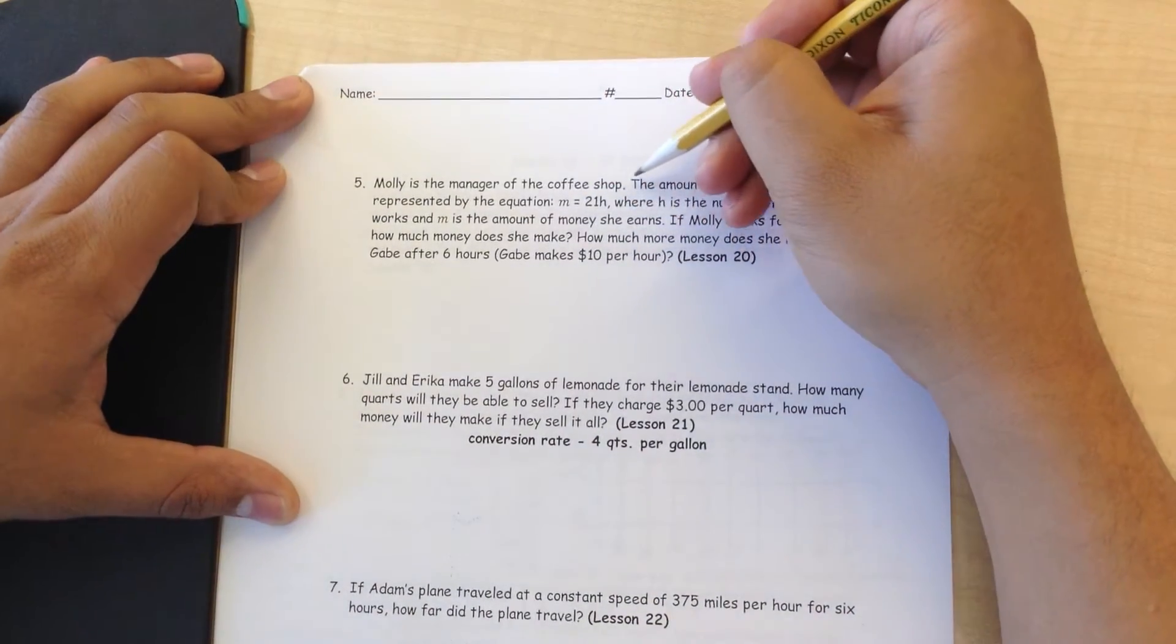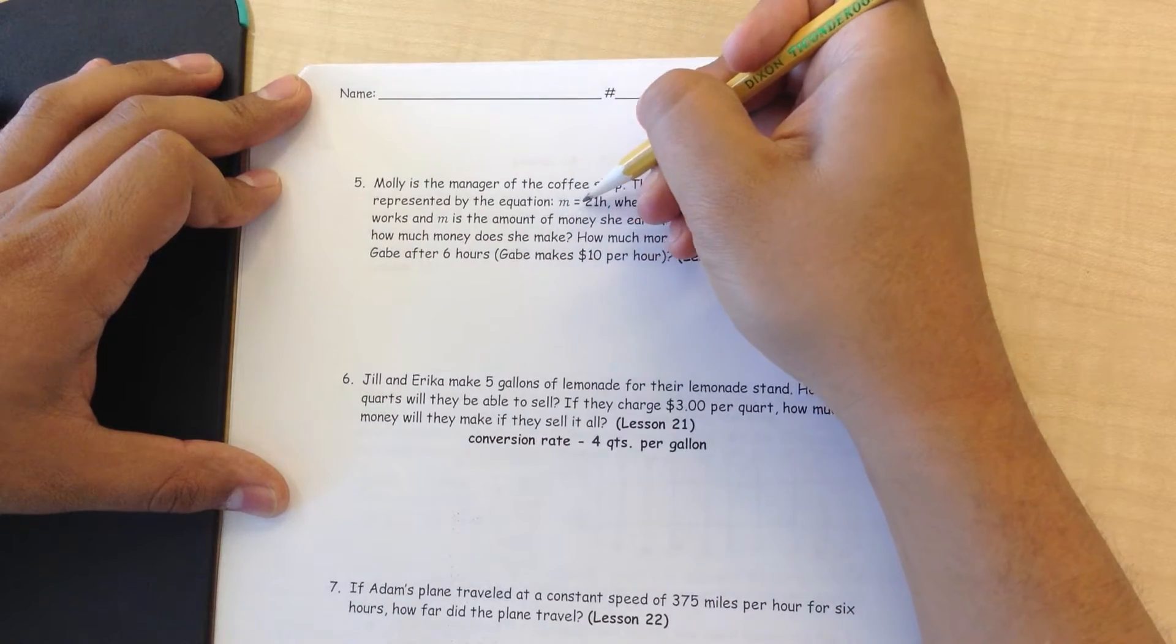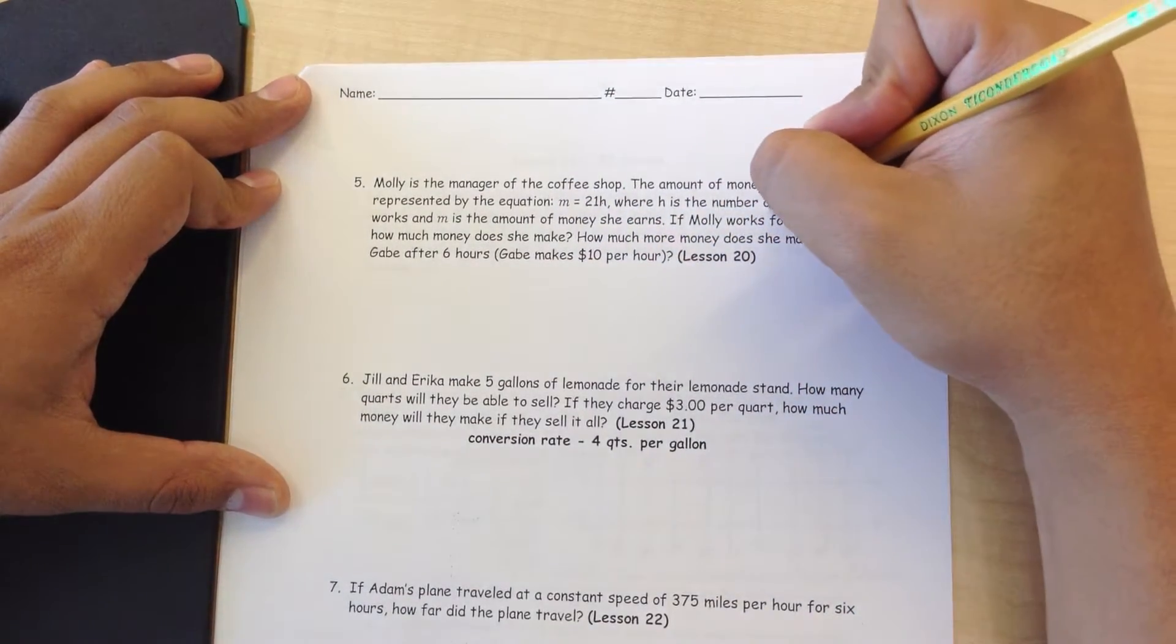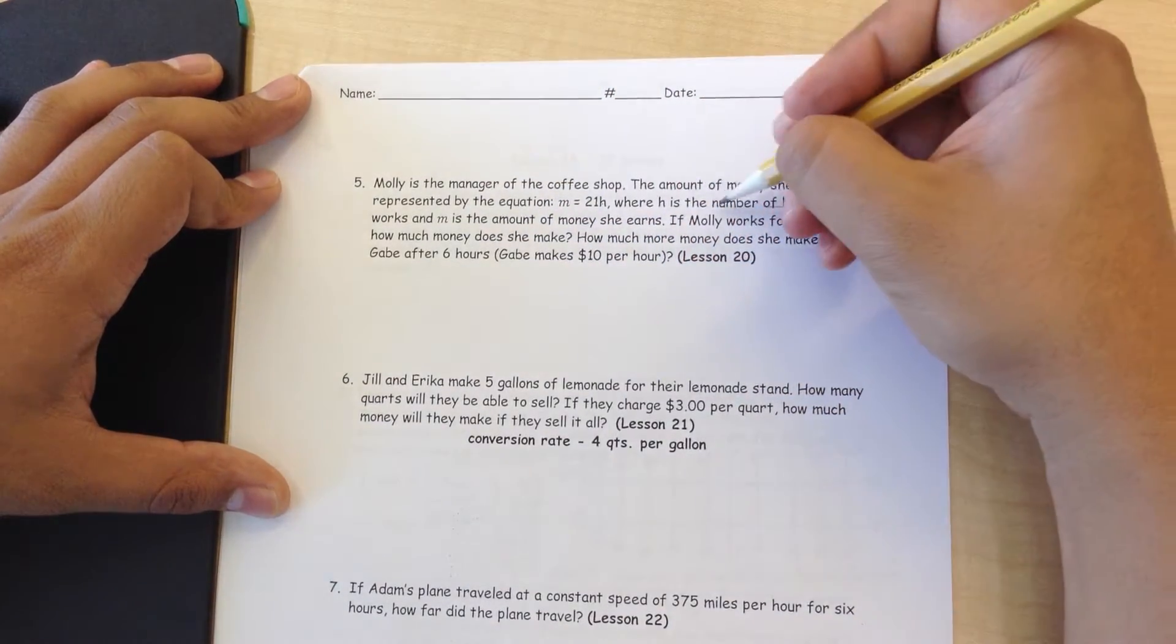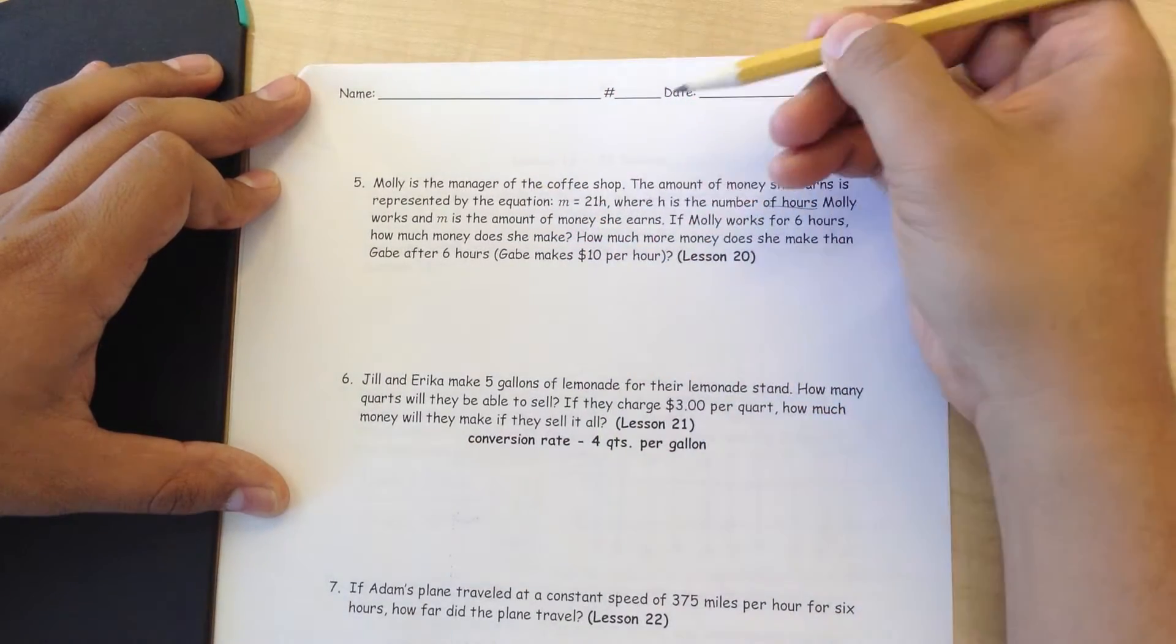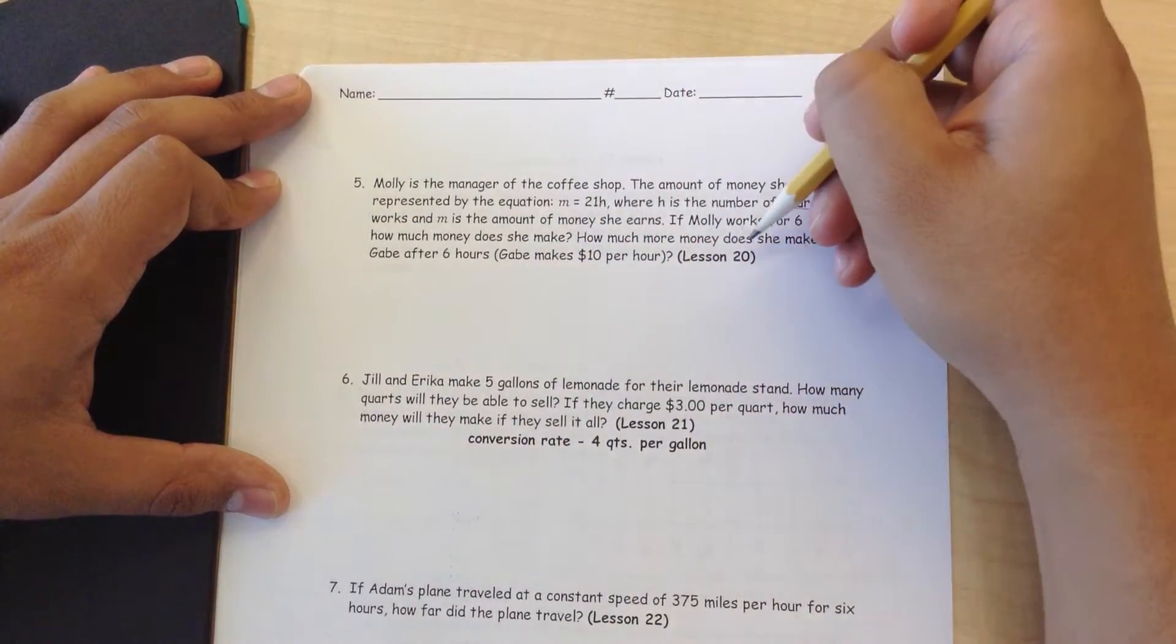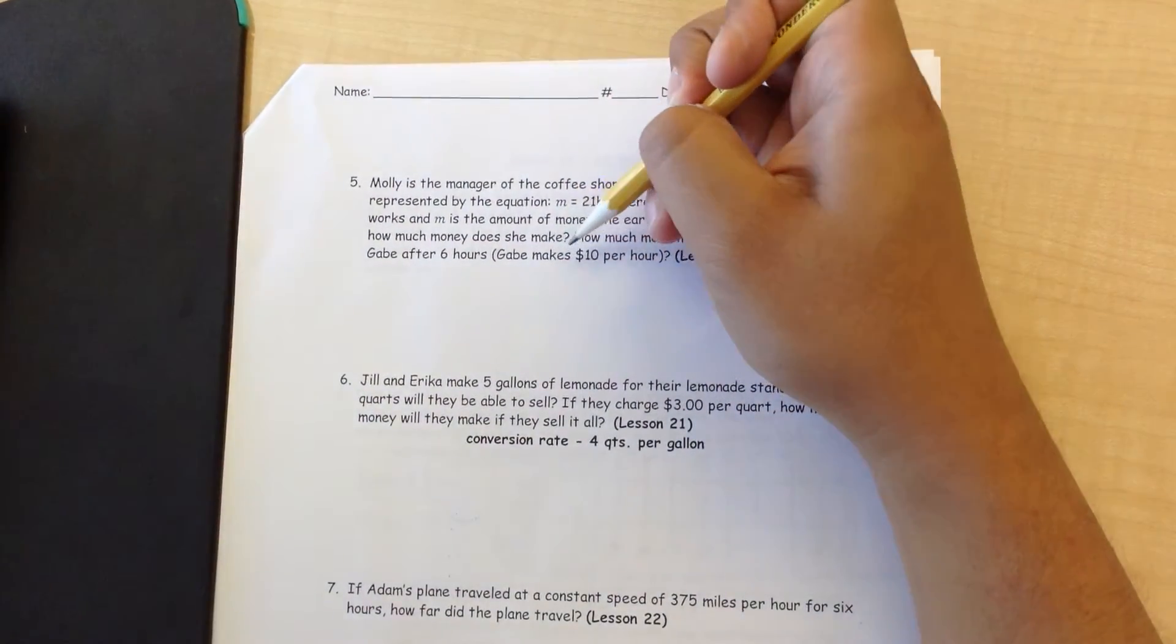Okay, Molly's the manager of the coffee shop. The amount of money she earns is represented by the equation M equals 21H, where H is the number of hours Molly works, and M is the amount of money she earns. If Molly works for 6 hours, how much money does she make? How much more money does she make than Gabe after 6 hours? Gabe makes $10 per hour.